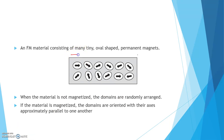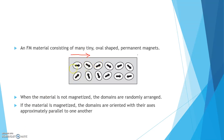Suppose you are applying an external magnetic field in a particular direction — then the small tiny magnets forming the ferromagnetic material will arrange in that direction. These small tiny magnets will arrange their axes parallel to each other and will align according to the applied external magnetic field.